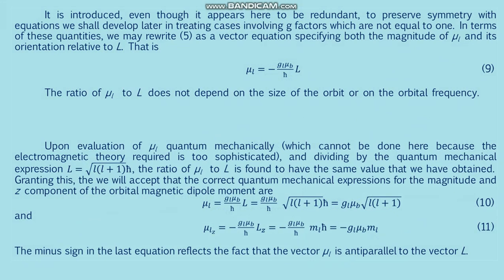The g-factor is introduced to preserve symmetry with equations involving g-factors not equal to one, which we will develop later. In terms of these quantities, we may rewrite formula five as a vector equation specifying both the magnitude of μ_L and its orientation relative to L: μ_L = −g_L · (μ_B/ℏ) · L, formula nine. The ratio μ_L to L does not depend on the size of the orbit or on the orbital frequency. By making similar calculations for an elliptical orbit, it can be shown that μ_L / L is independent of the shape of the orbit.